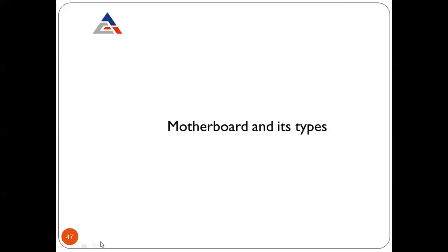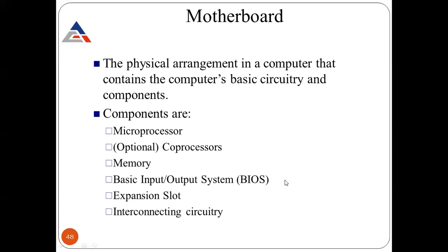The next topic is motherboard and its types. A motherboard is the physical arrangement in a computer that contains the computer's basic components. On the motherboard we have a CPU, a heat sink, a fan, a CMOS battery, CMOS cell, RAM chip, and hard drive — lots of components, and this physical arrangement is called a motherboard.